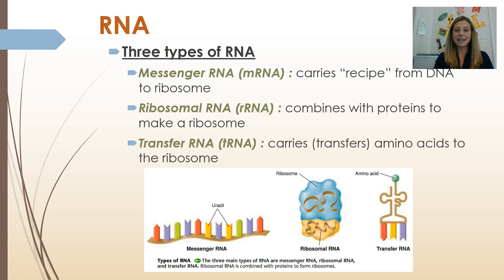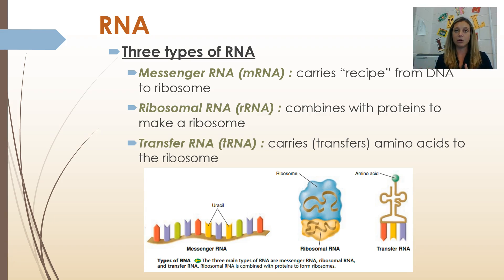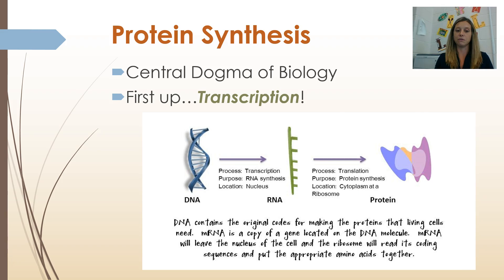There are three types of RNA. Messenger RNA — which we're going to spend the most time on — is mRNA; it acts as a messenger. It carries the recipe that's found in DNA all the way to the ribosome where the proteins are going to be made. Ribosomal RNA makes up part of a ribosome — a ribosome is literally just ribosomal RNA and jumbled-up proteins together. The last type of RNA is transfer RNA, or tRNA, and it transfers or carries amino acids to the ribosome. Proteins are made up of amino acids joined together, so those amino acids are brought to the ribosome by the transfer RNA.